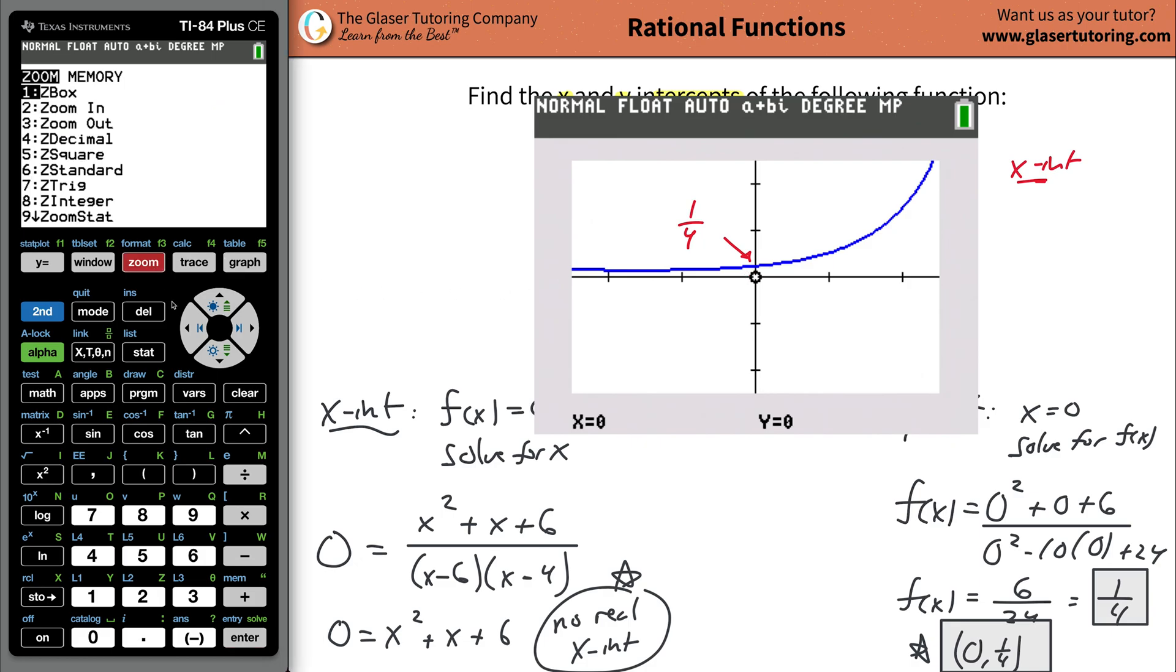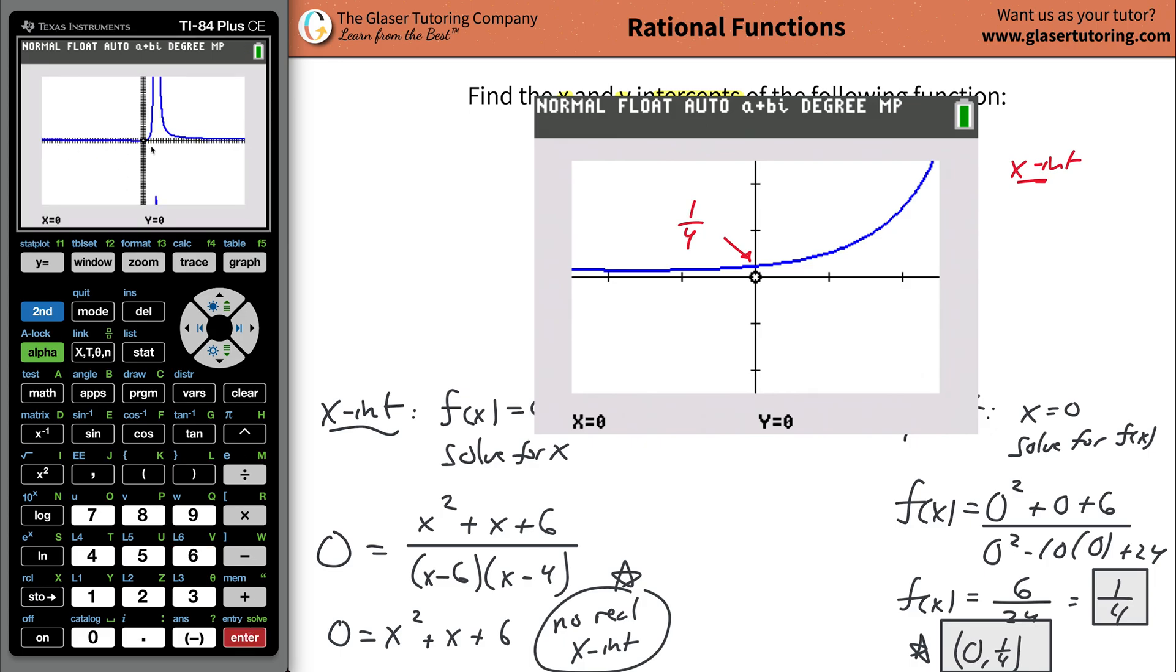If we zoom back out, go to zoom standard. I'll zoom out one more, let's go to zoom three. You see how this function, there's nowhere it's going to cross that x-axis. Hopefully that helps. It's tough to see with this picture, but they're not real.